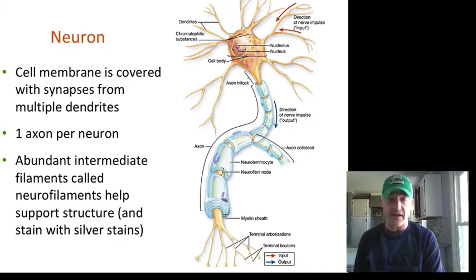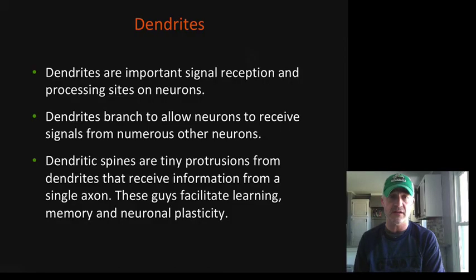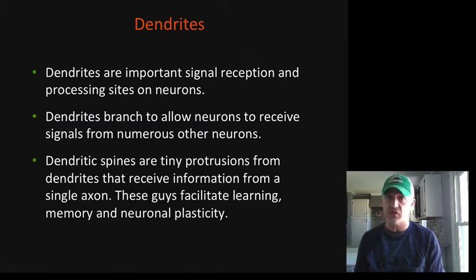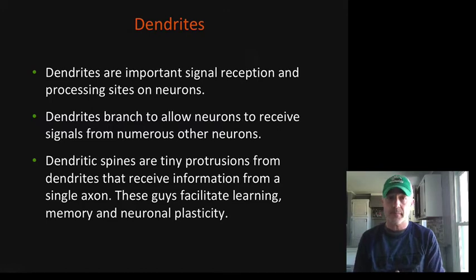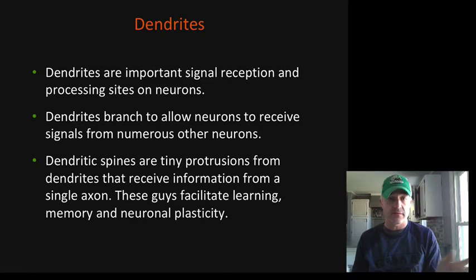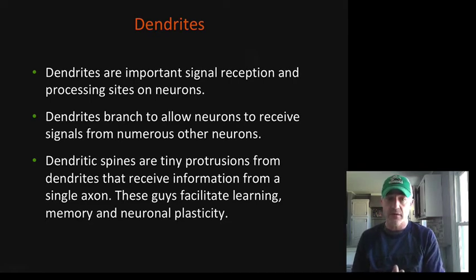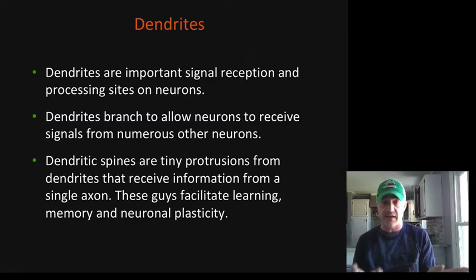The axon contains lots of filaments providing structure — if you stain with a silver stain, you can see those as dark black. Dendrites are usually present in large numbers and are like branches on a tree, which is actually where the name comes from — 'dendros' is Greek for tree. They branch to provide a large surface area and opportunity for many synapses, bringing incoming messages to the neuron cell body.